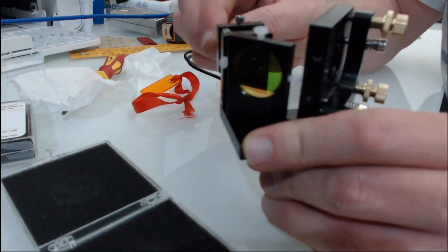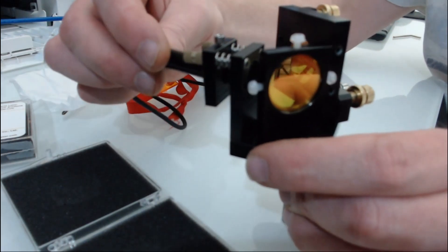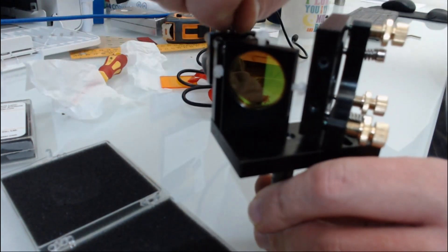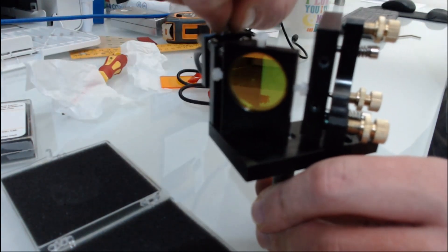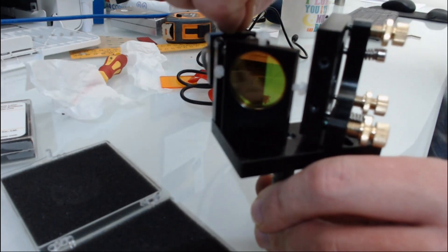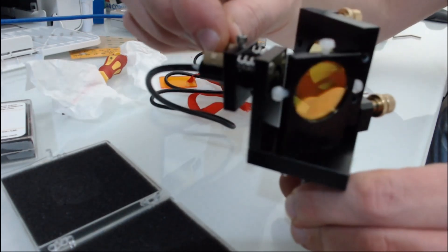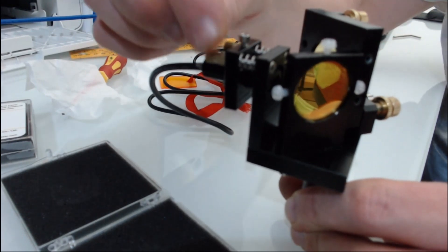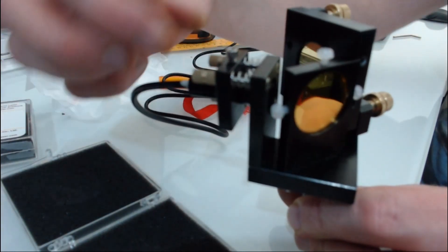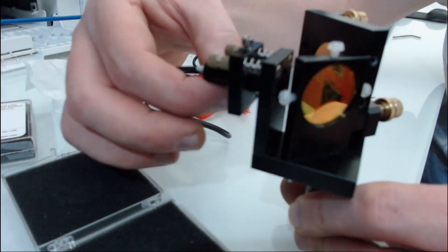The red dot gets mounted through the side here and gets tightened up with this one here. Now we can adjust that red dot position later on when it's inside the machine by using these little adjusting screws.